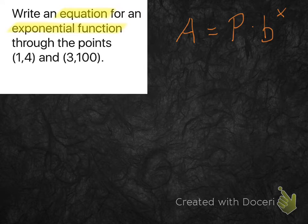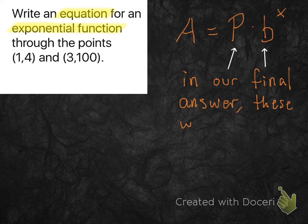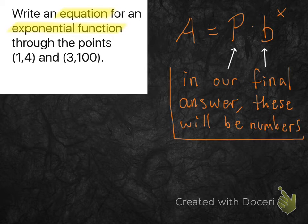So what we're trying to do in this problem is figure out what p and what b are as numbers. Otherwise, A and x are going to remain A and x in our final answer. p and b just need to be numbers. And we need to use these two points, 1, 4 and 3, 100, to do that. So let's see how they come into play.